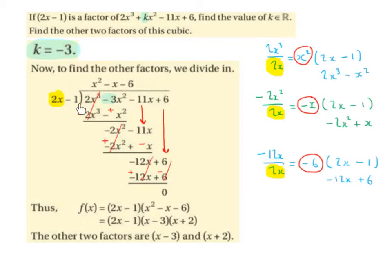We're going to put a bus stop over the polynomial and put our factor of 2x minus 1 in front of the bus stop. We're going to use algebraic long division to find the other two factors of the cubic. We take the highest power of x, which is 2x cubed, divided by the highest power of x outside the bus stop, which is 2x. And 2x cubed divided by 2x is x squared.